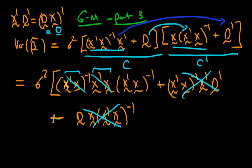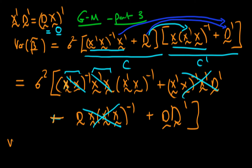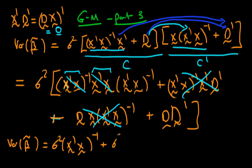Finally, we're left with the product of matrix D times D primed, which we can't simplify. So the variance of beta tilde equals sigma squared times x primed x to the power minus 1, plus sigma squared times D times D primed.